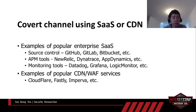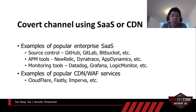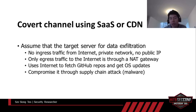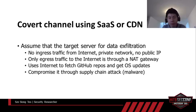For example, if an organization uses GitHub, their CI/CD servers would need to connect to GitHub to fetch application source code during the build process. The same applies when an application needs to send or receive data from any other cloud services. Due to this reason, the IP ranges of these cloud services are normally whitelisted in their SIEM and allowed by their firewall. Assume we are the attacker and our target for data exfiltration is a server running in a secure network, sitting behind a firewall with no public IP address, reachable only through a NAT gateway, and using the internet to fetch repositories from GitHub and get OS patches. We're going to compromise that server through a supply chain attack.